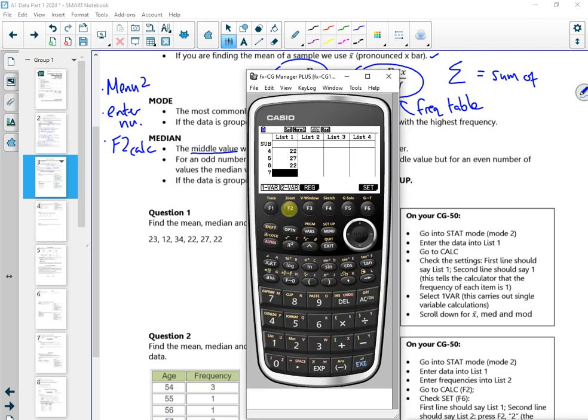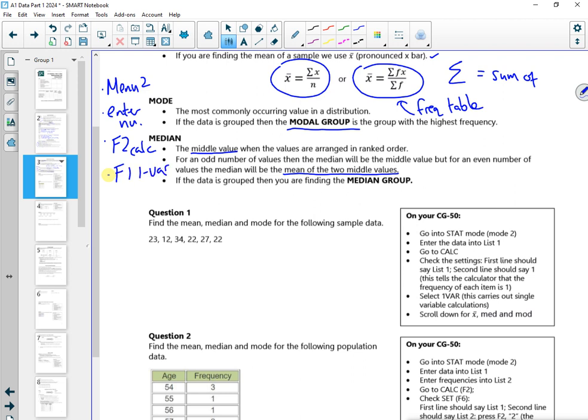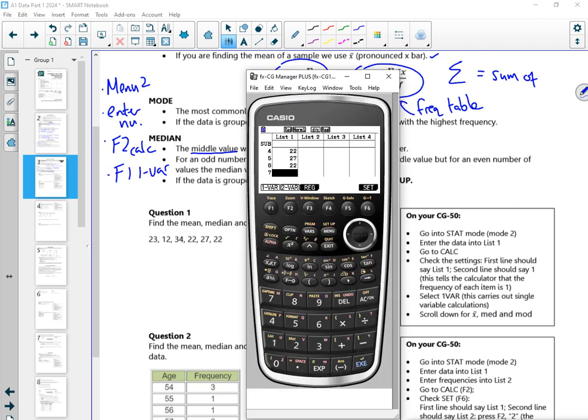I'm doing F2 for calc. Now I'm just going to check the set, so F6. That there is set for if it's just a list of numbers like this. List 1 is for a list of numbers. When you put your calculator in exact mode, it changes it back to that if you've moved it. So now if I do F1, which is 1 there, it gives me lots and lots of information.